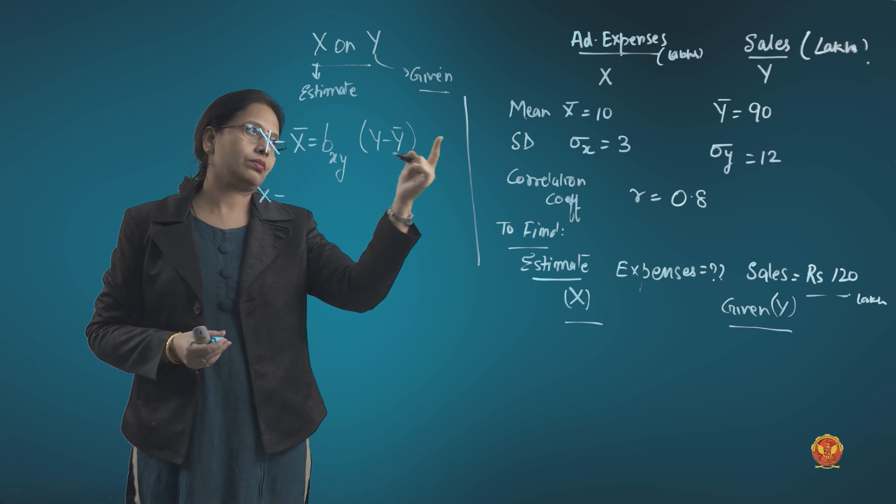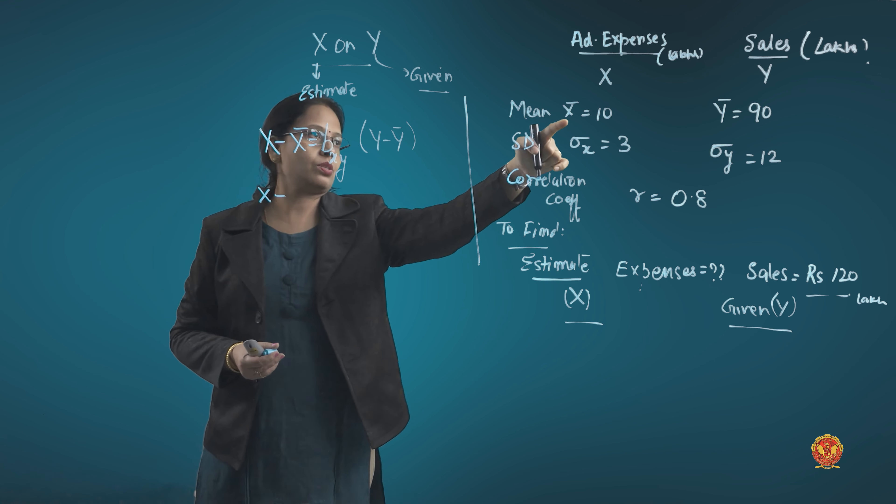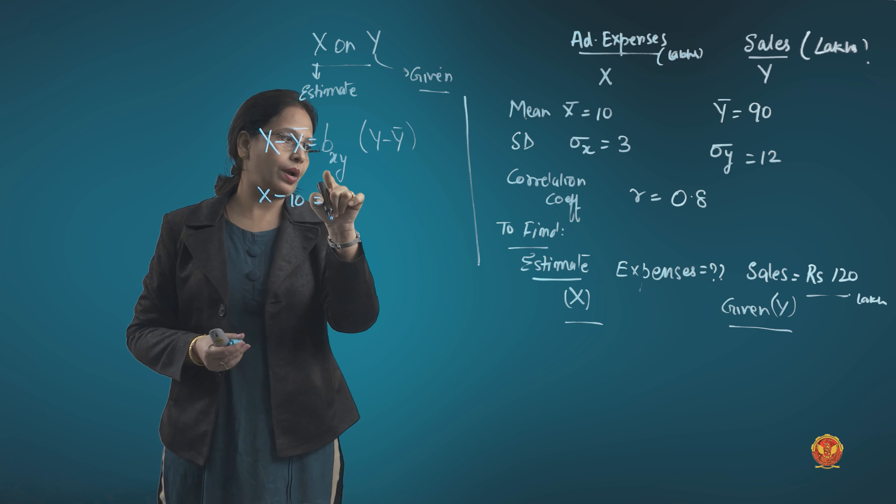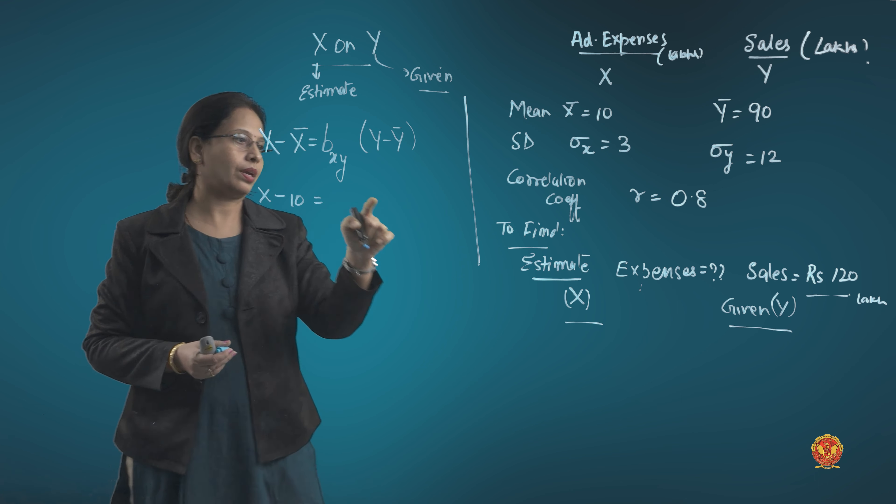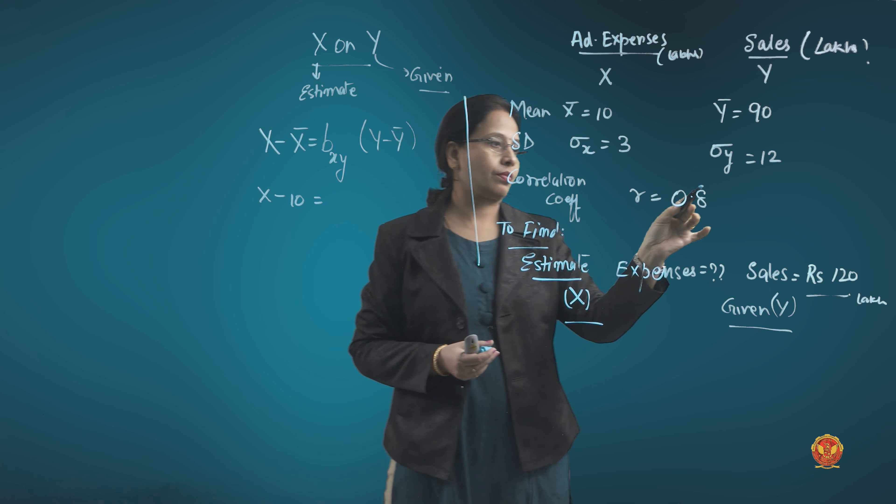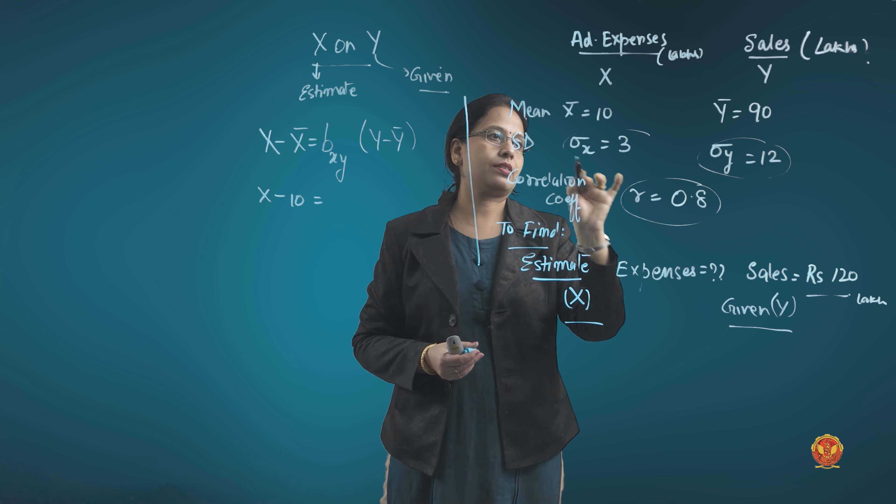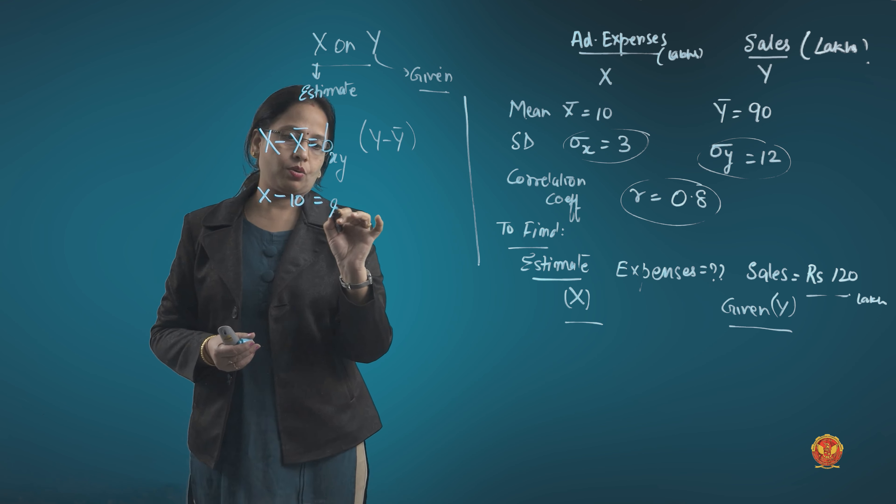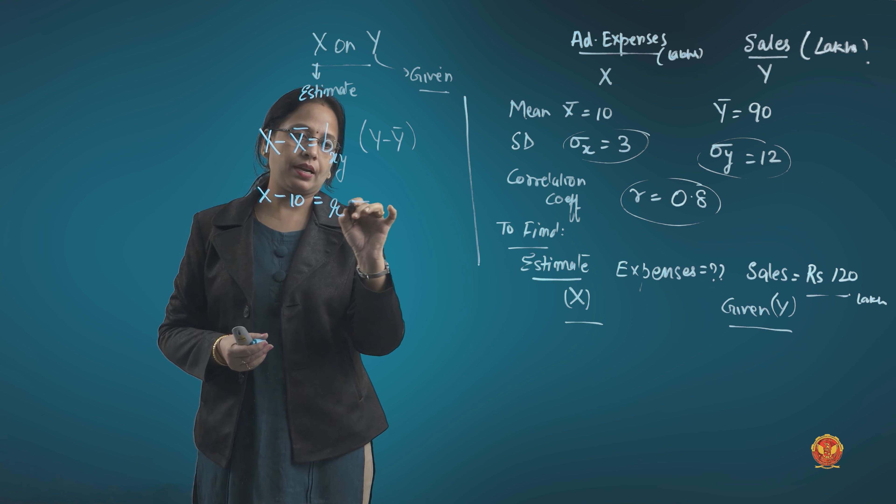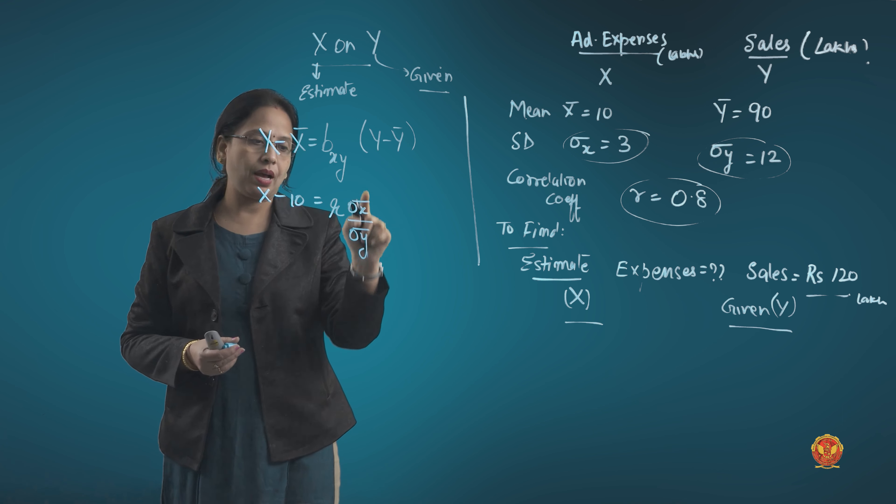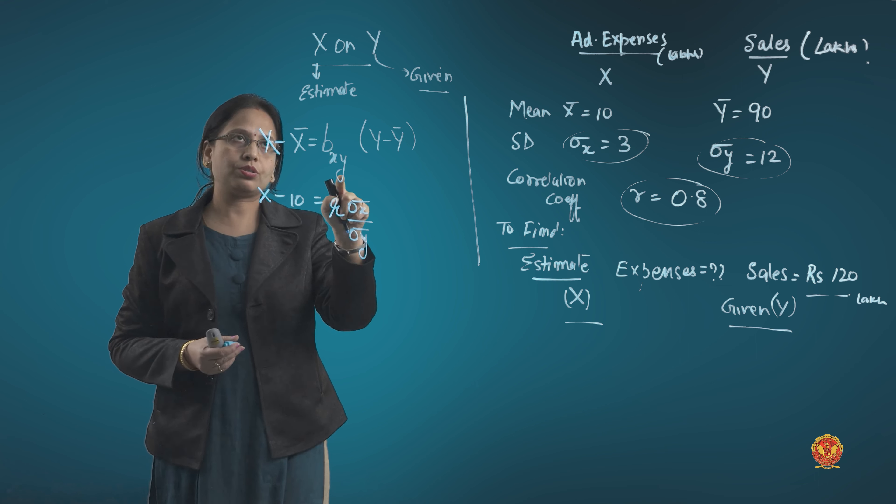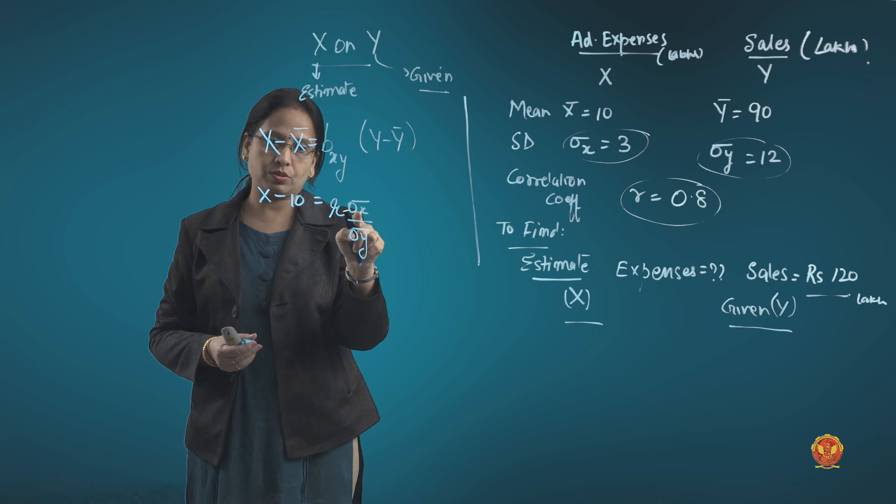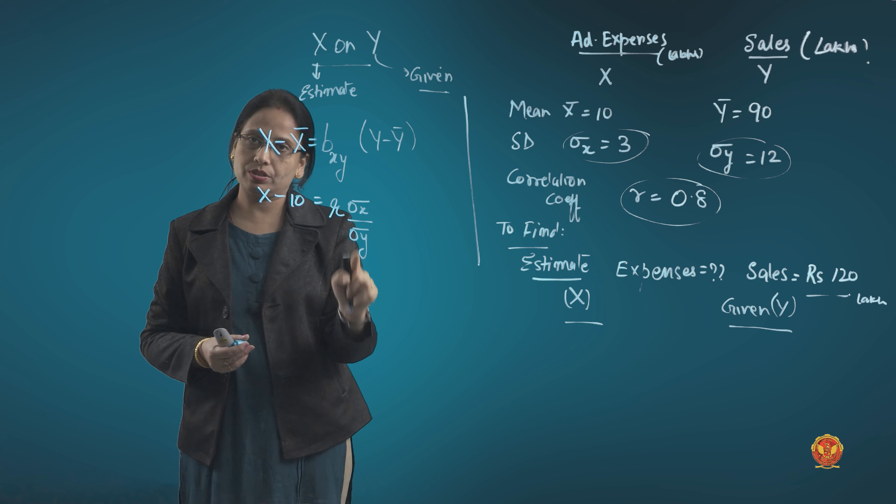Write it down. It's x minus x mean. See, everything is given. X mean is given as 10. Bxy, this we have to calculate using the value of r and standard deviation. Use the formula of bxy: coefficient of correlation times standard deviation x divided by standard deviation y. X is in front, so it's in the numerator. Y is at the back, so it is in the denominator.